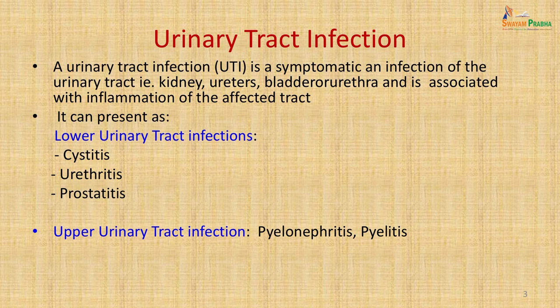What is a urinary tract infection? A urinary tract infection is a symptomatic infection of any part of the urinary tract. It could involve the kidney, ureters, bladder or urethra, and is generally associated with localized inflammation of the affected part. It can present with lower urinary tract symptoms clinically as cystitis, urethritis or prostatitis, or with upper urinary tract infection like pyelonephritis and pyelitis.